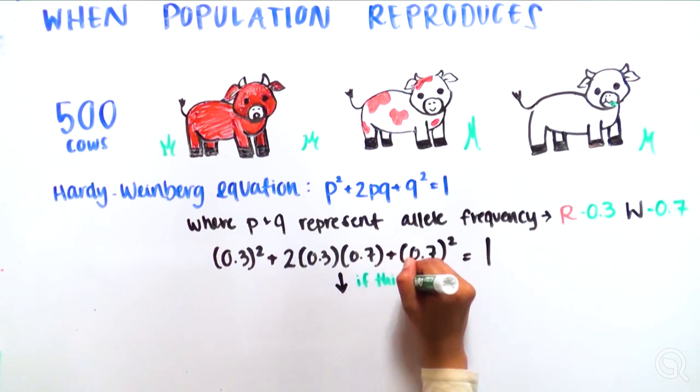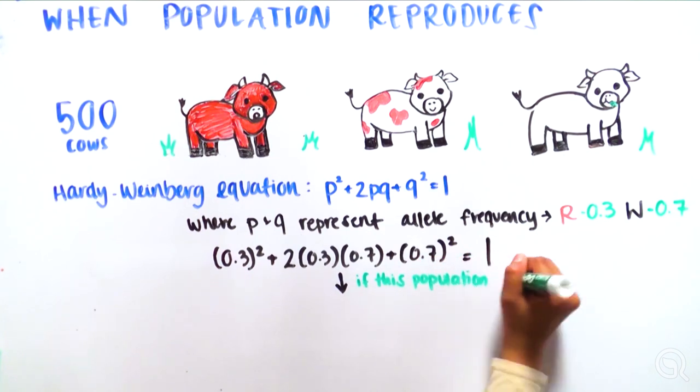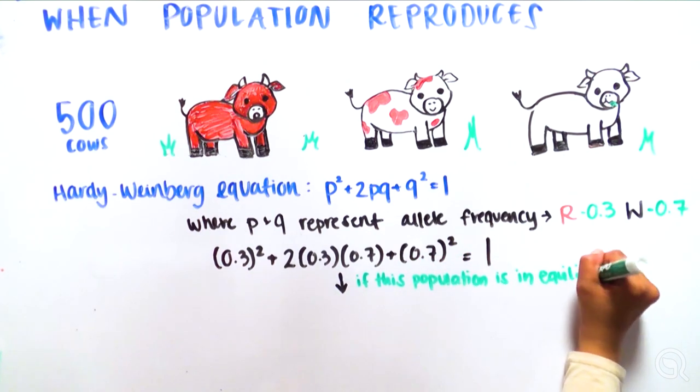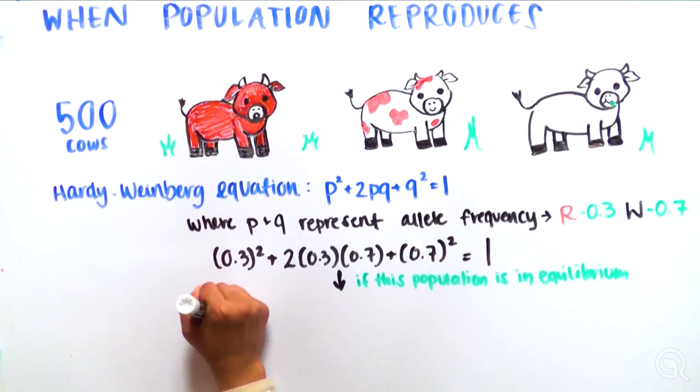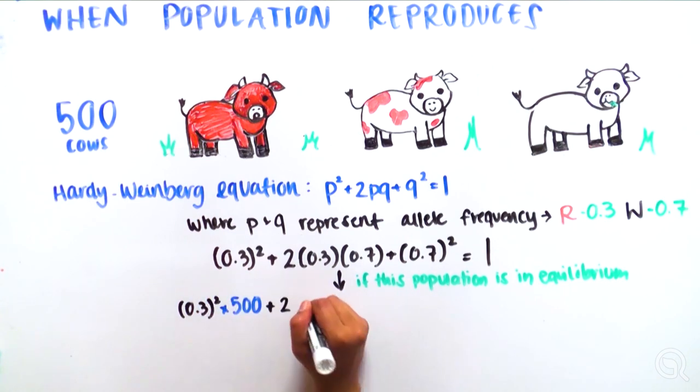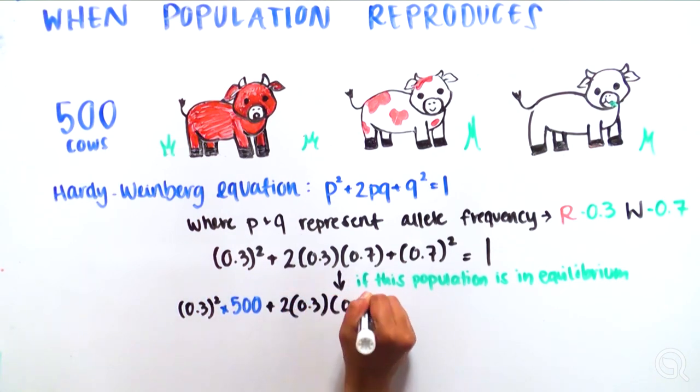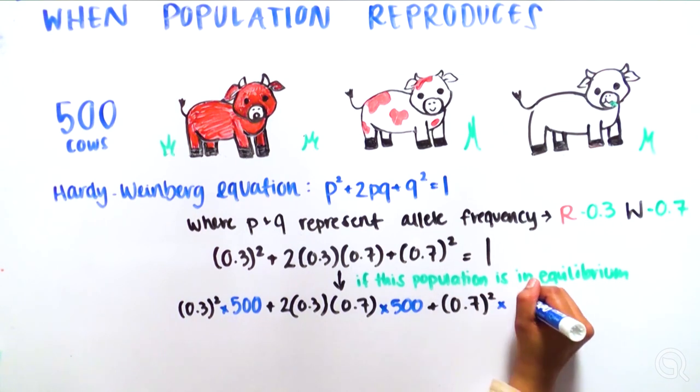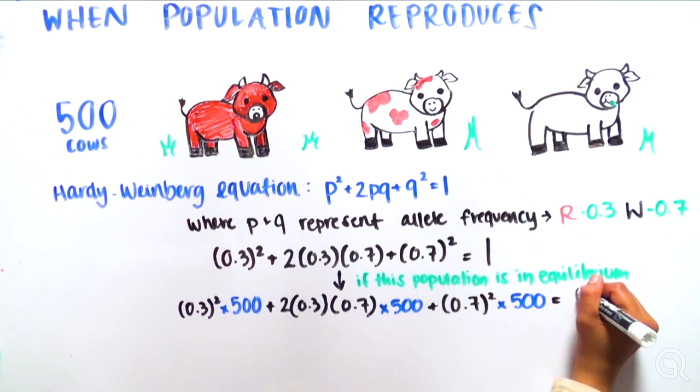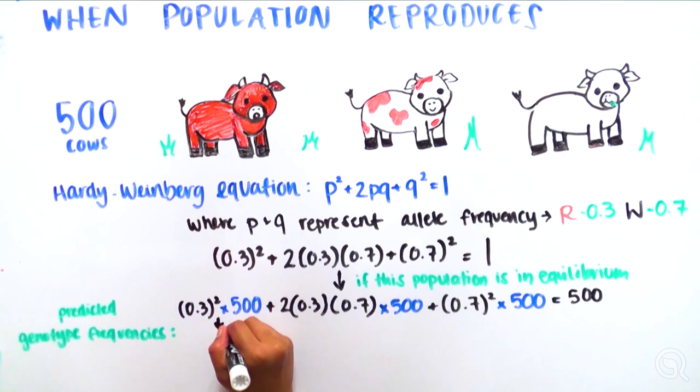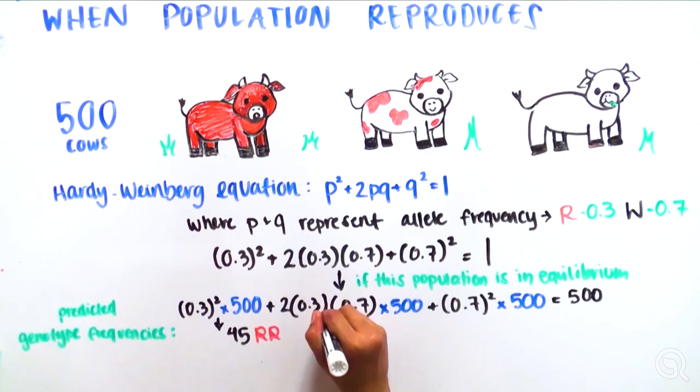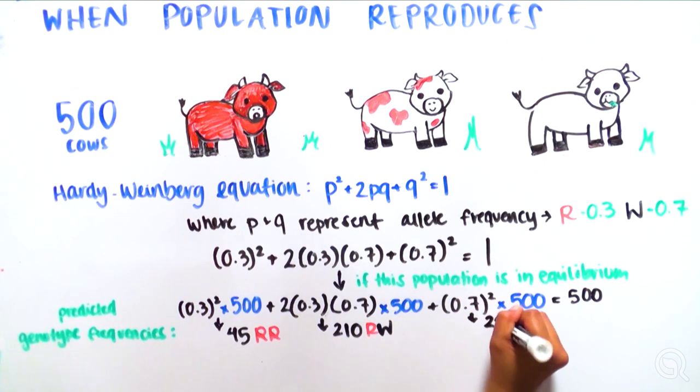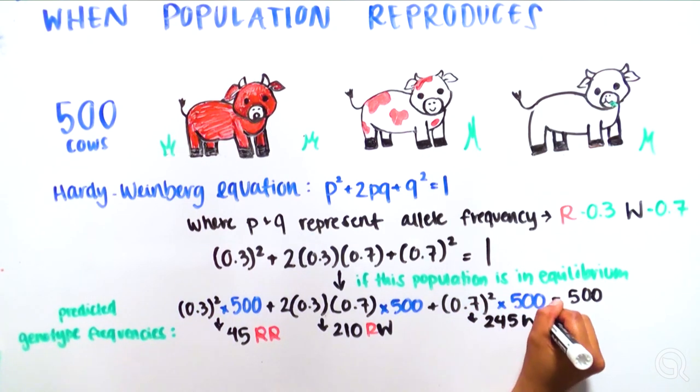Thus, if the alleles of this gene in the population of 500 cows are in equilibrium, we would expect to see 0.3 squared times 500 plus 2 times 0.3 times 0.7 times 500 plus 0.7 squared times 500 is equal to 500, equaling 45 RR red cows, 210 RW roan cows, and 245 WW white cows.